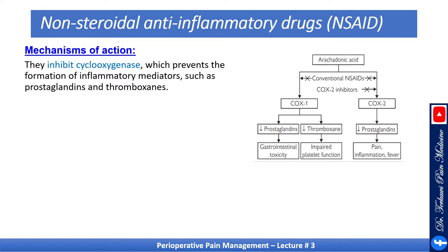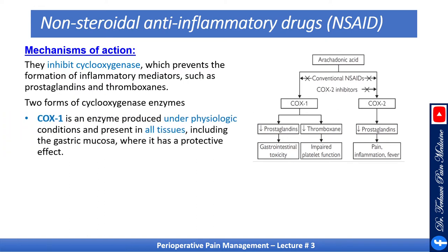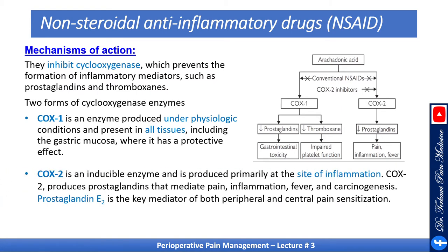NSAIDs inhibit cyclooxygenase, which prevents the formation of inflammatory mediators such as prostaglandins and thromboxane. There are two forms of cyclooxygenase. COX-1 is an enzyme produced under physiologic conditions and present in all tissues including gastric mucosa, where it has a protective effect. COX-2 is an inducible enzyme produced primarily at the site of inflammation. COX-2 produces prostaglandins that mediate pain, inflammation, fever, and carcinogenesis.